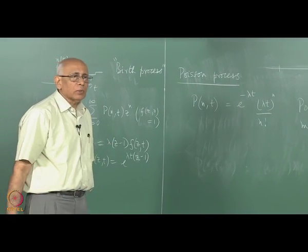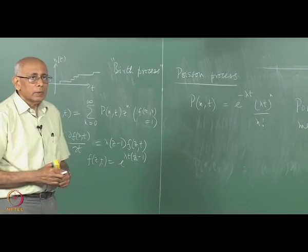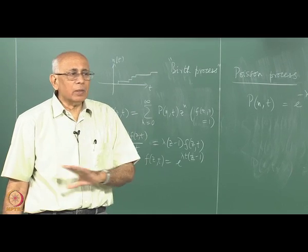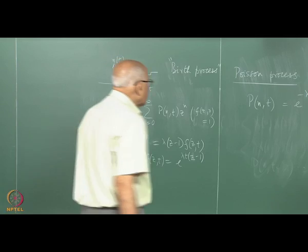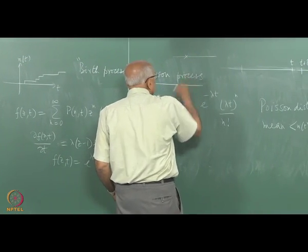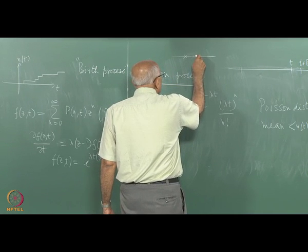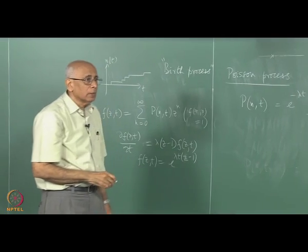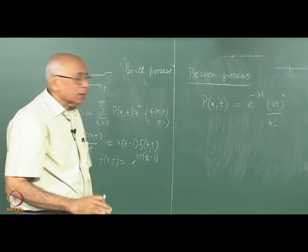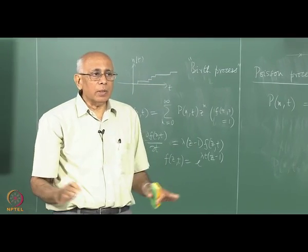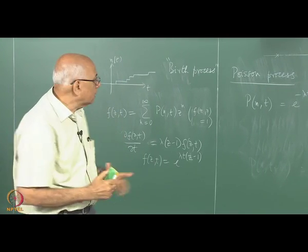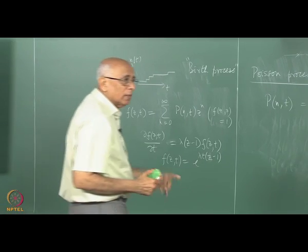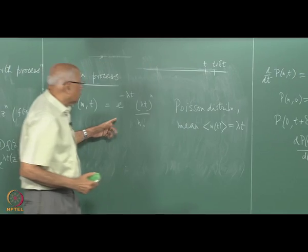The most crucial assumption going into the Poisson process is that successive events are completely uncorrelated and independent. The probability that an event occurs at any point is completely independent of when the previous event occurred. This is the stationary Poisson process — characteristic of something completely uncorrelated. Any degree of memory, or anything other than this exponential form for P(0, t), immediately introduces memory into the problem.